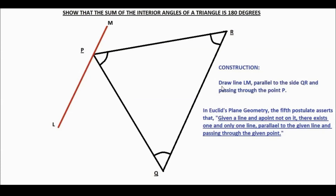We do the following construction: we draw the line LM parallel to the side QR and passing through the point P. In Euclid's plane geometry, the fifth postulate asserts that given a line and a point not on it, there exists one and only one line parallel to the given line and passing through the given point. So if QR is the given line and P is a point not on QR, there exists one and only one line parallel to QR passing through P, and we have found that line LM is that line.